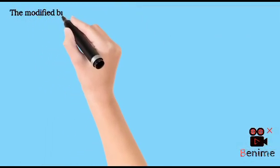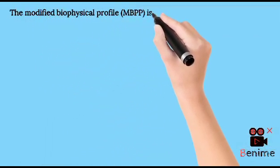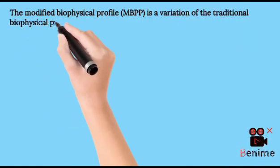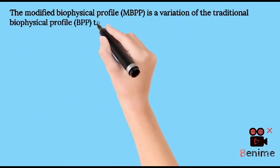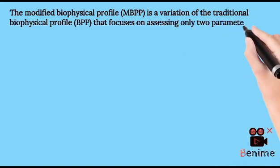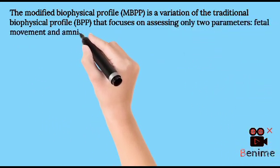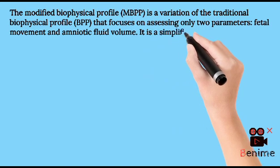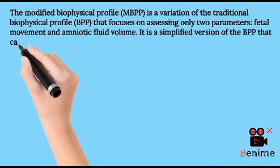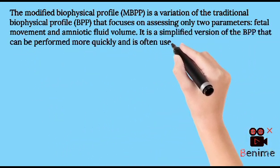The modified biophysical profile (MBPP) is a variation of the traditional biophysical profile (BPP) that focuses on assessing only two parameters — fetal movement and amniotic fluid volume. It is a simplified version of the BPP that can be performed more quickly and is often used when time or resources are limited.